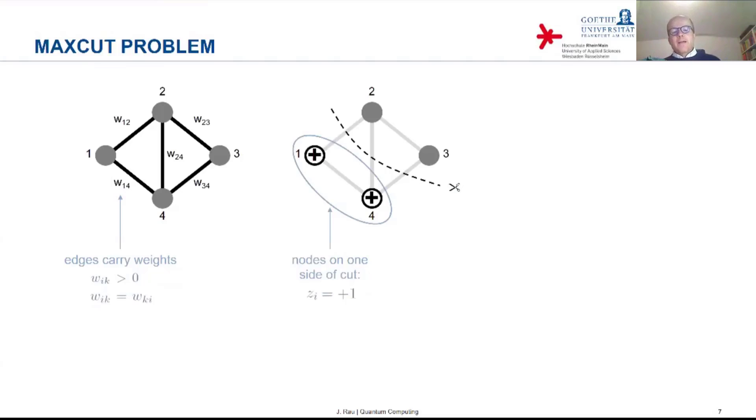And we can assign a variable to each node and give it the value plus one in one subset. And we can give it the value minus one in the other subset. Let's call this variable Z_I, where I refers to the node.